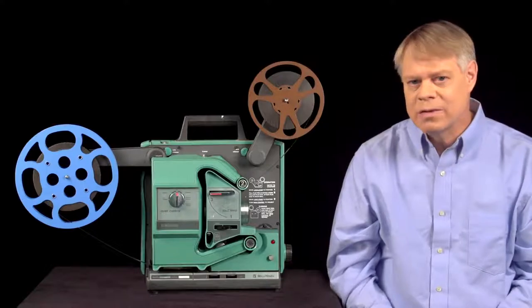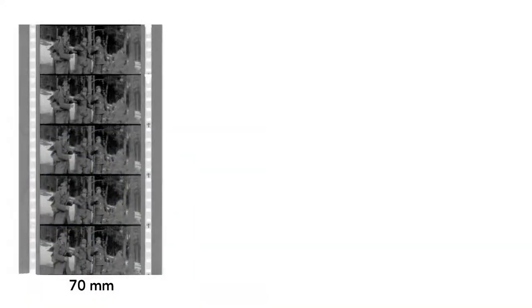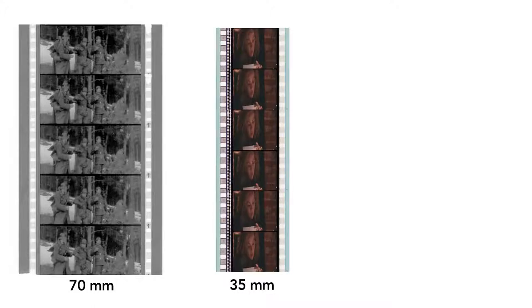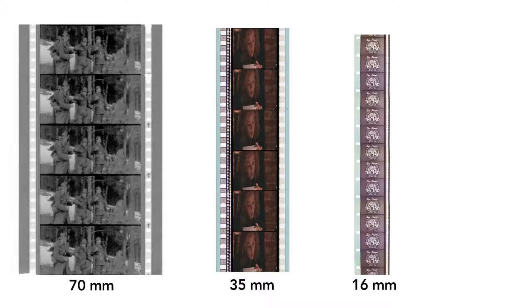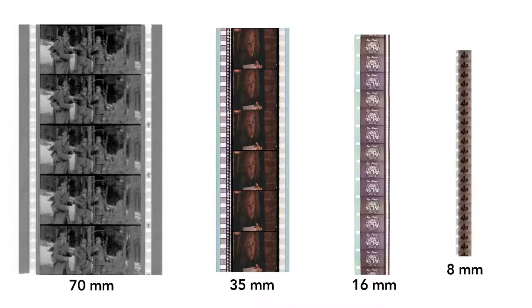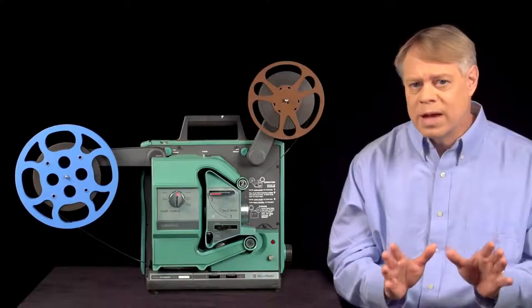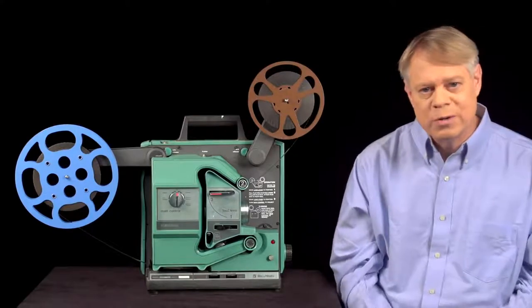Film came in many sizes, from the giant 70mm popular in the 1960s for epics like Lawrence of Arabia, to 35mm used for most feature films, to 16mm for schools, and even 8mm used by home enthusiasts. The larger the film, the greater the resolution. All worked with mechanisms similar to common 16mm projectors.